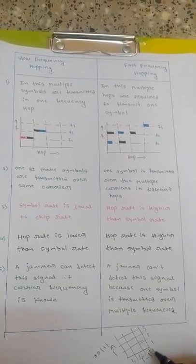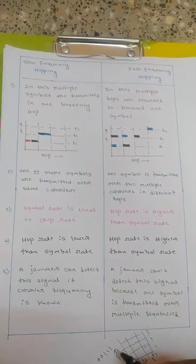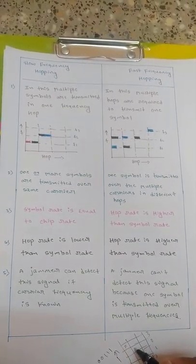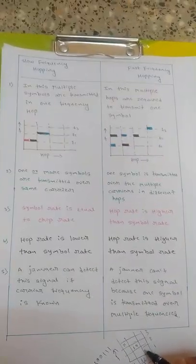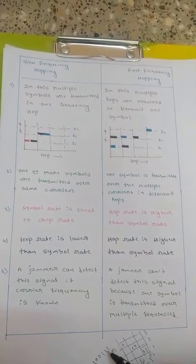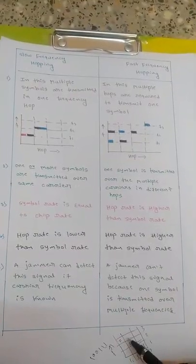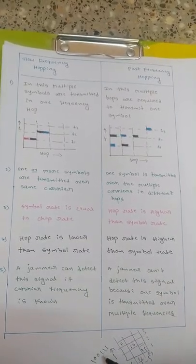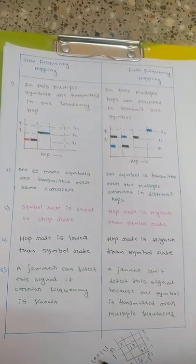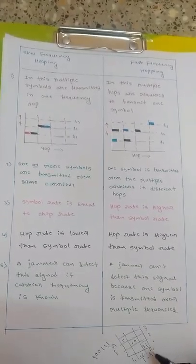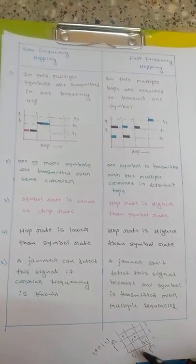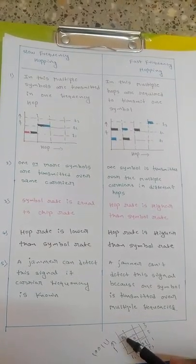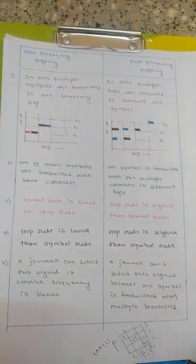So t1, t2, and t3 are the time hops. We will be transmitting '1 1' here, '1 0' here, and '0 1' here. So if this is our data, then '1 1' we will transmit in the third frequency, '0 1 0' in the second frequency, and '0 1' in the first frequency — so that no one can jam our signal or decode it without knowing this pattern. This pattern is known only by us — where and in what frequency we are transmitting what data.